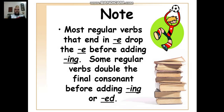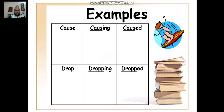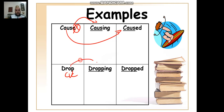Most regular verbs that end in E drop the E before adding ING. Some regular verbs double the final consonant before adding ING or ED — that's the consonant-vowel-consonant rule. For example, 'close': omit the E, then add ING or ED. For 'drop': P is the consonant, O is the vowel, R is the consonant — so double the last consonant before adding ING or ED.